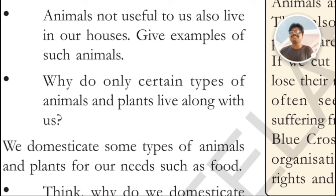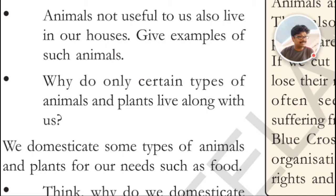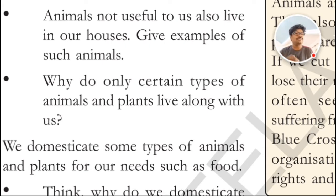Why do only certain types of animals and plants live along with us? Dogs are very faithful to us — the most faithful animal in nature is the dog. If we give food to a dog, it always remains faithful to the one who feeds it. Even cats live along with us in our houses — the cat is a very close animal to human beings.